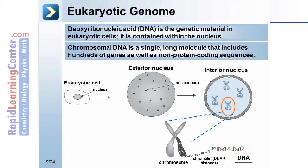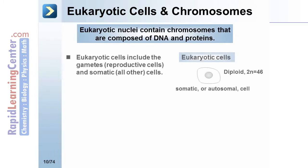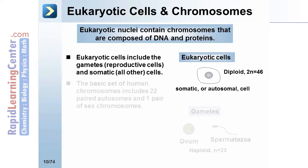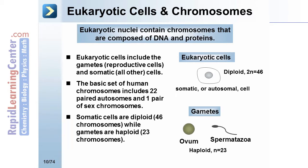Here we see a eukaryotic cell with its nucleus; when the nucleus is exploded, you can see chromosomes inside, and the exterior of the nucleus contains nuclear pores. Eukaryotic nuclei contain chromosomes composed of DNA and proteins. Eukaryotic cells include gametes (reproductive cells) and somatic cells (all other cells). The basic set of human chromosomes includes 22 paired autosomes and one pair of sex chromosomes. Somatic cells are diploid with 46 chromosomes, while gametes are haploid with 23 chromosomes.